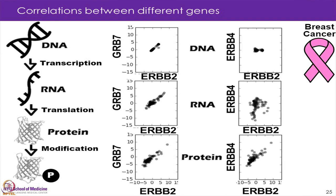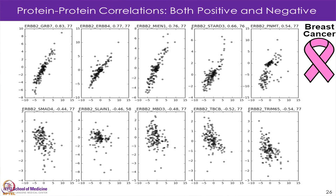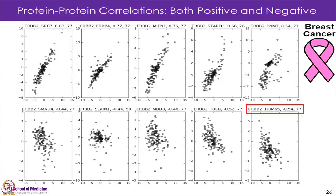But if we compare ERBB2 to ERBB4, we see that ERBB4 does not have any copy number changes. The transcript levels are not correlated, but we have rather high correlation on the protein level, and this is quite common for proteins that work together. If we look at ERBB2 in general and just rank, in breast cancer, which genes are highly correlated with it on the protein level, we see some with high positive correlation — GRB7 and ERBB4 are the two highest — but there are also others with rather high negative correlations, at least one at minus 0.54 correlation coefficient.